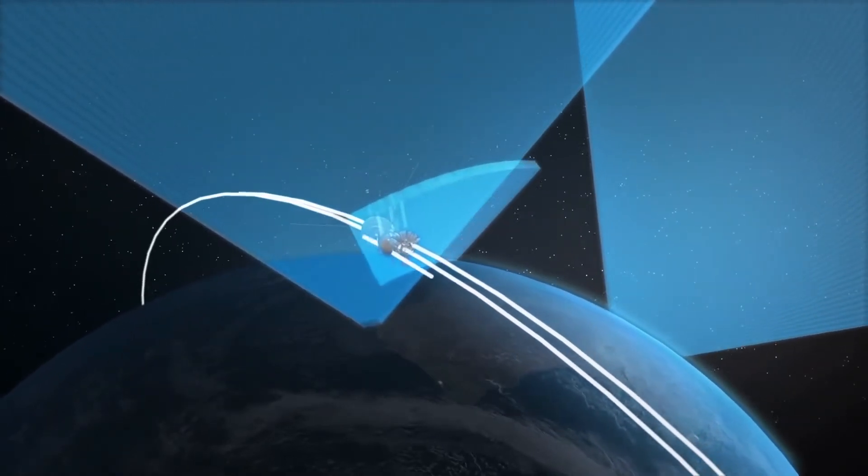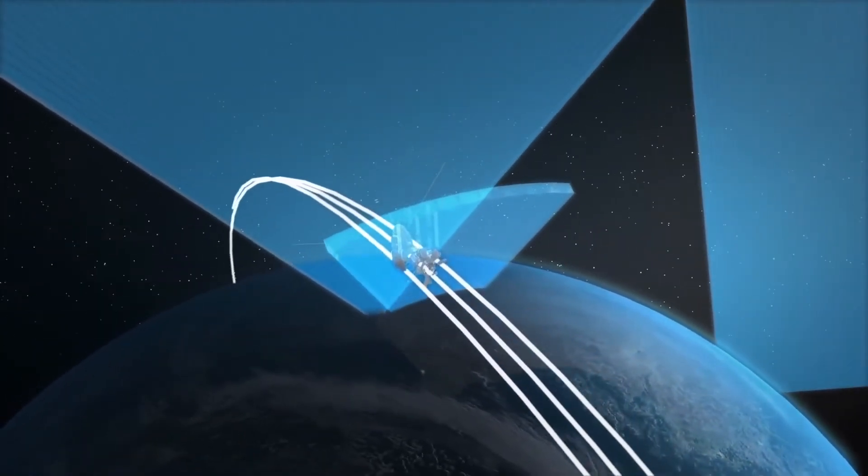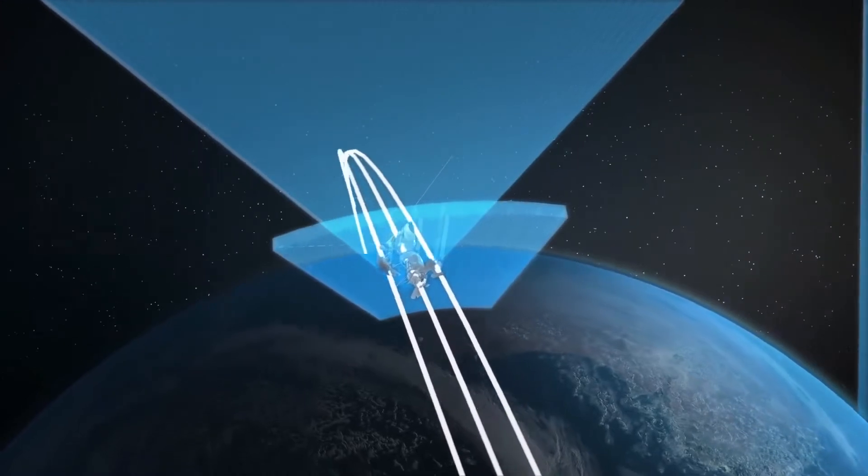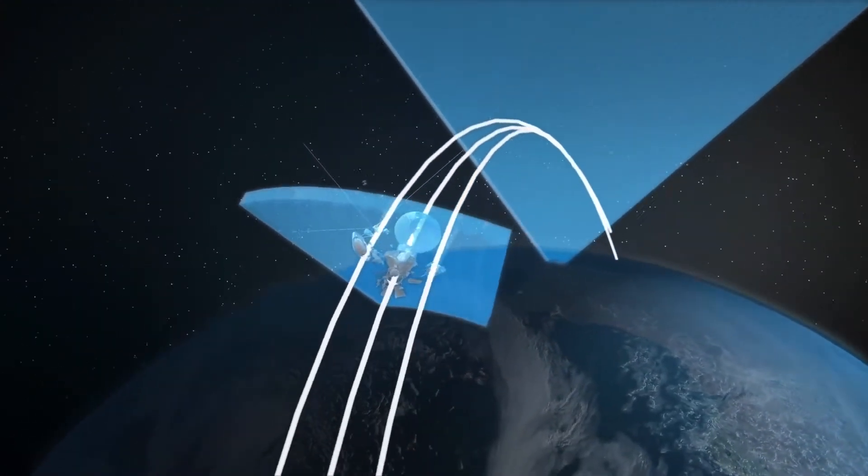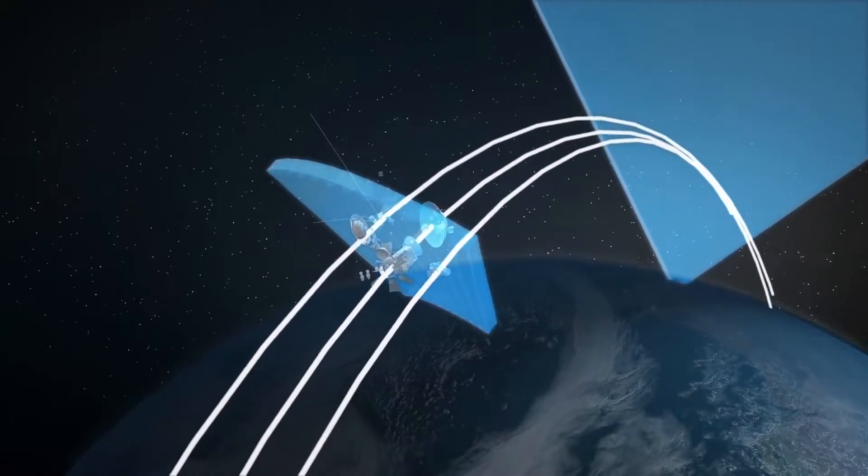For high-interest objects, a micro-fence can be electronically constructed to gather more tracked data, focusing radar resources specifically on that object, providing more timely and accurate information.